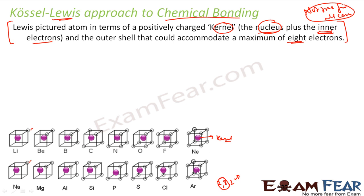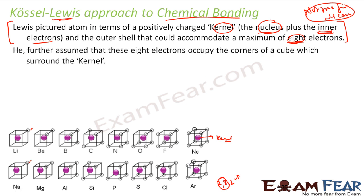Argon has eight outermost electrons and neon has eight outermost electrons — this is the maximum. He further assumed that these eight electrons occupy the corners of a cube, which is why a cubical structure is drawn here. These electrons occupy the corners of the cube. This is what the theory proposes.